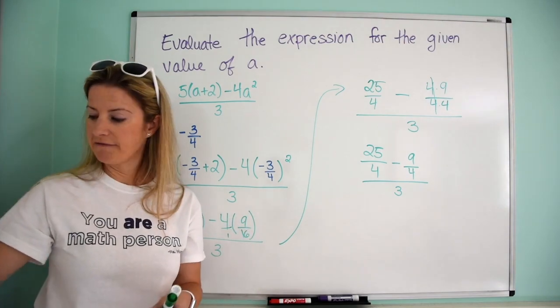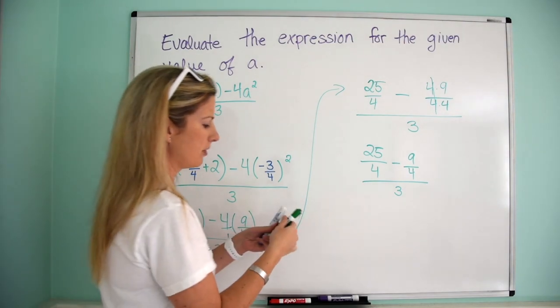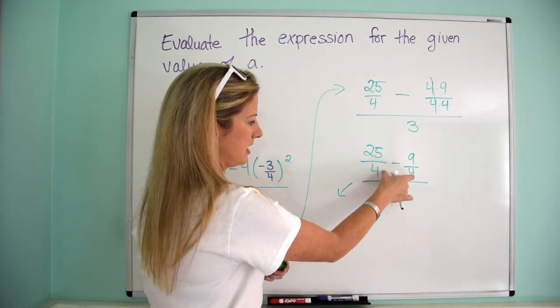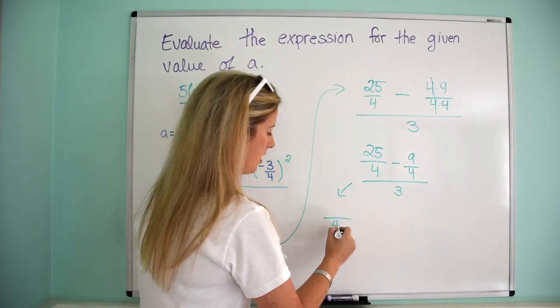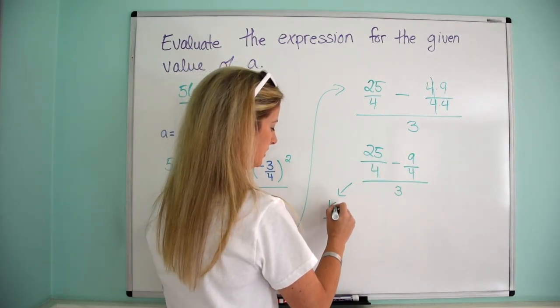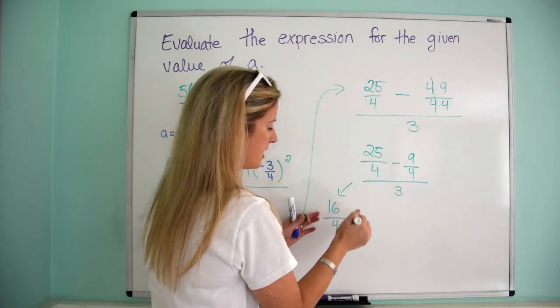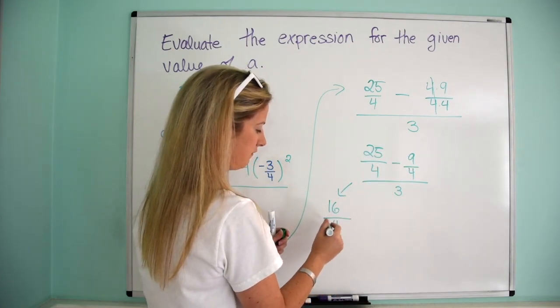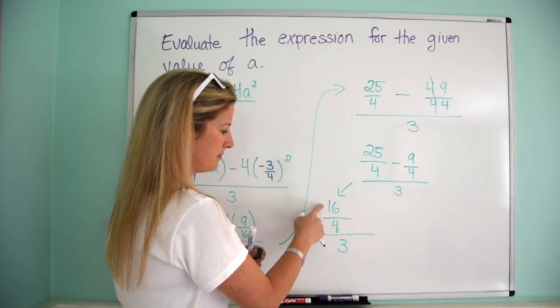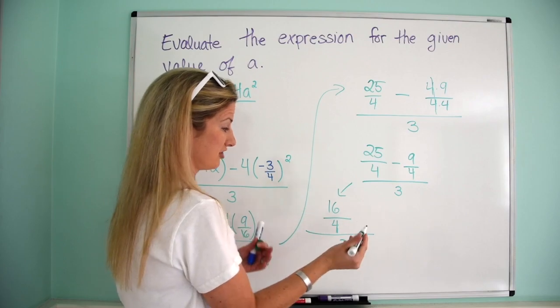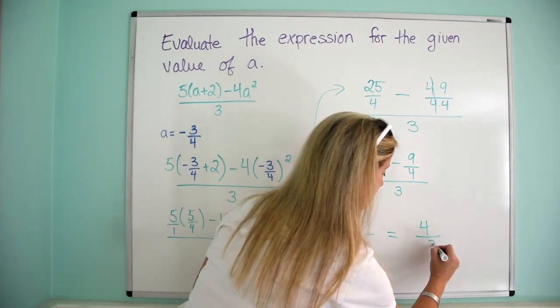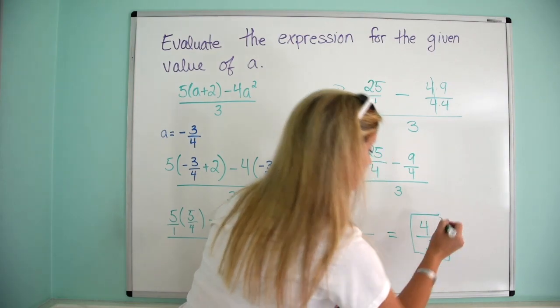All right, so let's continue, we're almost done, so 25 fourths minus 9 fourths. Remember, because the denominator is the same, it's going to be something over 4, so I just have to worry about the numerator, so 25 minus 9 is 16, and then remember, that's my numerator, my numerator is 16 fourths, so then I have to divide by 3. So then my numerator is 16 over 4, which actually I know is 4, because 16 divided by 4 is 4, and then over 3, and that is my answer.